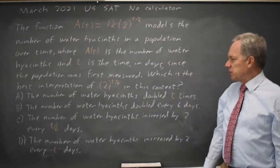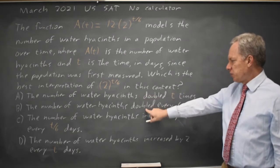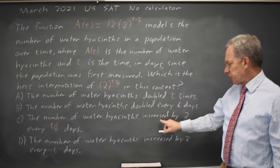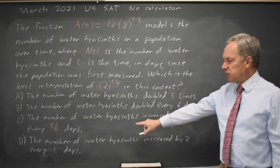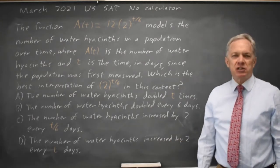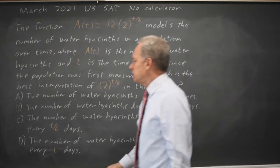That means we're going to be looking at doubling. Choice A and B both talk about the number doubling. C talks about increasing by 2 every fixed interval and D talks about increasing by 2 every fixed interval. C and D are linear so they are not correct.